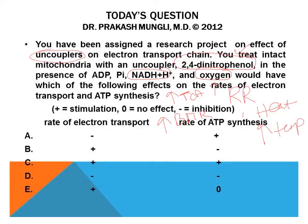Thyroid hormones T3 and T4 enhance the uncoupling action mediated by thermogenin via norepinephrine and sympathetic activity. Norepinephrine-mediated action increases thermogenin activity, and T3/T4 synergize with norepinephrine-mediated activation of thermogenin. That is why when T3/T4 levels are elevated, respiratory rate increases, body temperature increases, and basal metabolic rate increases due to increased TCA cycle activity.